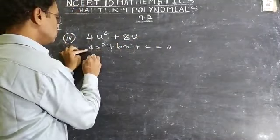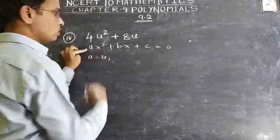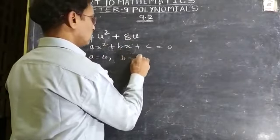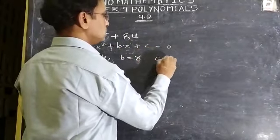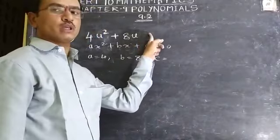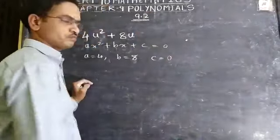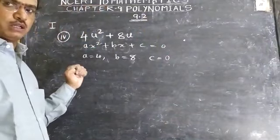A is equal to what is here? 4. B is equal to what is here? 8. C is equal to - the third term is not given. What should we do? We should take 0. This point is clear.